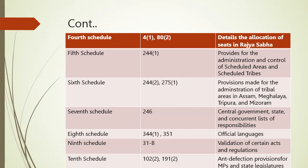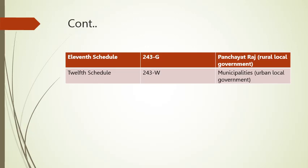The seventh schedule explains the central government, state, and concurrent list responsibilities, and includes article 246. The eighth schedule, covering articles 344(1) and 351, explains the official languages. The ninth schedule covers violations of certain acts and regulations and includes article 31B. The tenth schedule includes articles 102(2) and 191(2) and explains anti-defection provisions for MPs and state legislators.